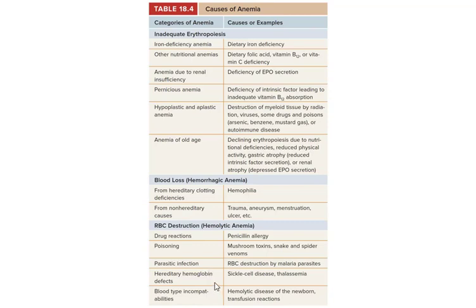There are hereditary hemoglobin defects — sickle cell disease and thalassemia — where you're genetically programmed to make a different kind of hemoglobin that doesn't work as well. If someone gives you blood from a person with a non-matching blood type, all your blood is going to clot and your blood cells will pop, and you're dead. Hospitals try not to make that mistake, but there's also the Rh factor issue with pregnancy.